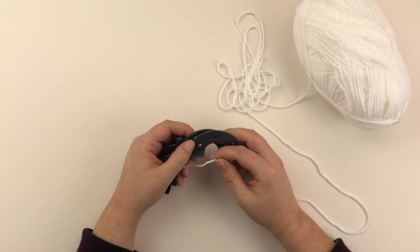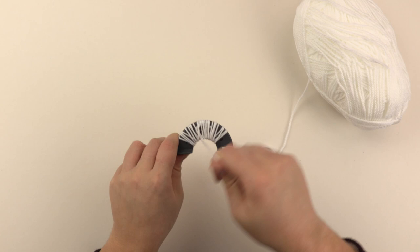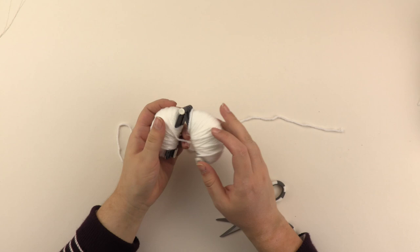Start off by making your white pom-pom. So using white wool, I'm just going to wrap around my pom-pom maker like so. So now that I've wrapped wool around both sides, I'm just going to close together and then snip down the center.